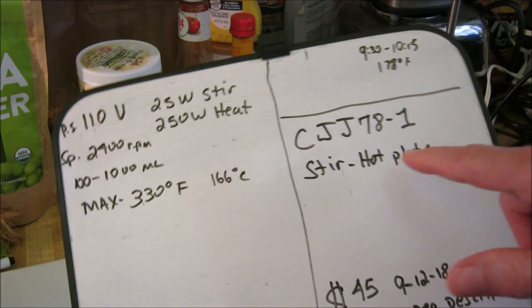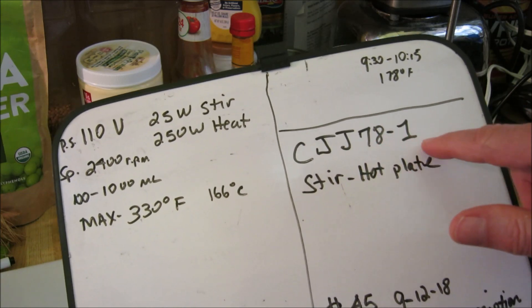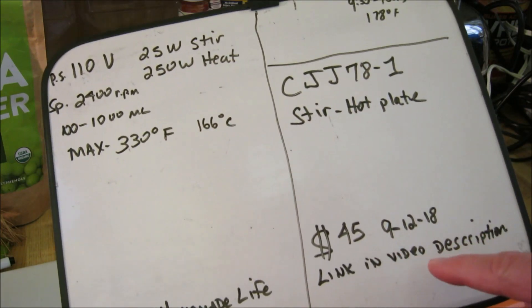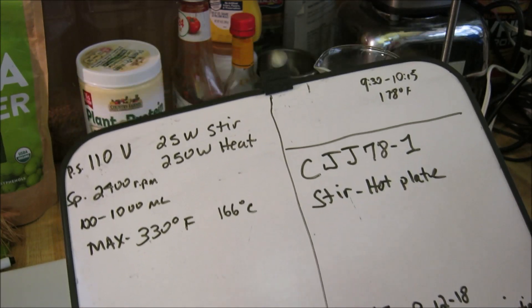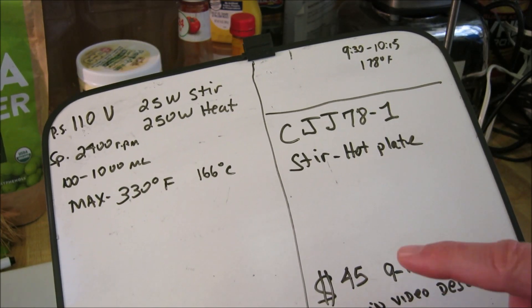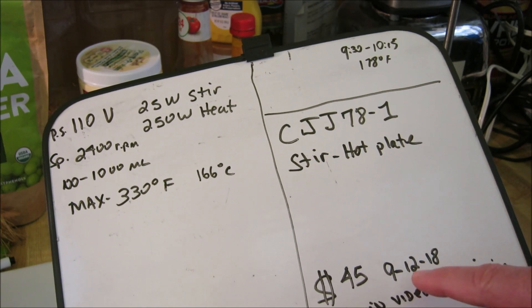This is the model, it's a CJJ78-1. I'll have a link to it in the video description on Amazon if you want to find out more information about it or buy it. It was about 45 bucks on this date, the 12th of September.